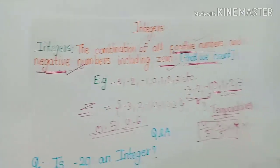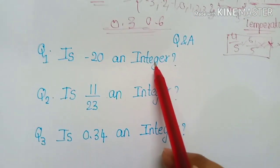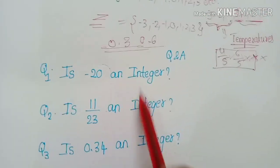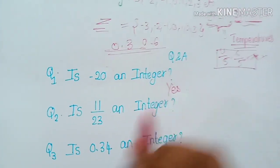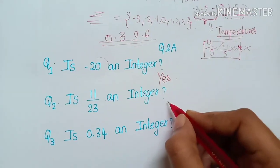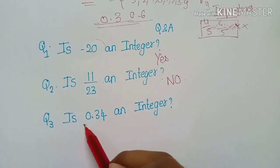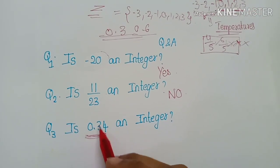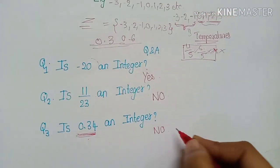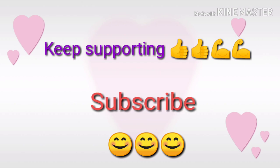Now let's go into questions. The first question is: is minus 20 an integer? Since all negative numbers that we count — like temperatures — are integers, minus 20 is also an integer, so the answer is yes. Next: is 11/3 an integer? We have already said that fractions are not included in integers, so the answer is no. The same applies to decimals — numbers like 0.34 or 0.64 are also not integers. Thank you for watching. Please don't forget to subscribe, share, and like for more videos.